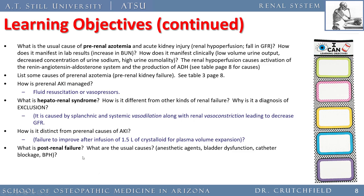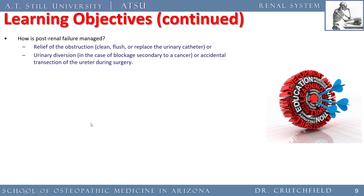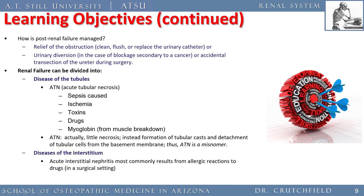Post-renal failure is anything that happens after the kidney has filtered blood — distal to the kidney. For example, a pinched ureter, a plugged Foley catheter, or an enlarged prostate blocking urine flow. Post-renal failure is managed by eliminating the obstruction — flushing the catheter, trimming the prostate, or performing a urinary diversion in cases where a cancer is pinching off a ureter or if a surgeon accidentally cuts a ureter.